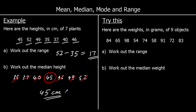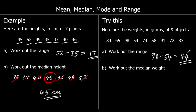Here's one for you to try. This time we've got the weights in grams of nine objects. The first question is asking for the range: the biggest number is ninety-eight, take away the smallest which is fifty-four. Ninety-eight take away fifty-four is forty-four, so the range is forty-four grams.